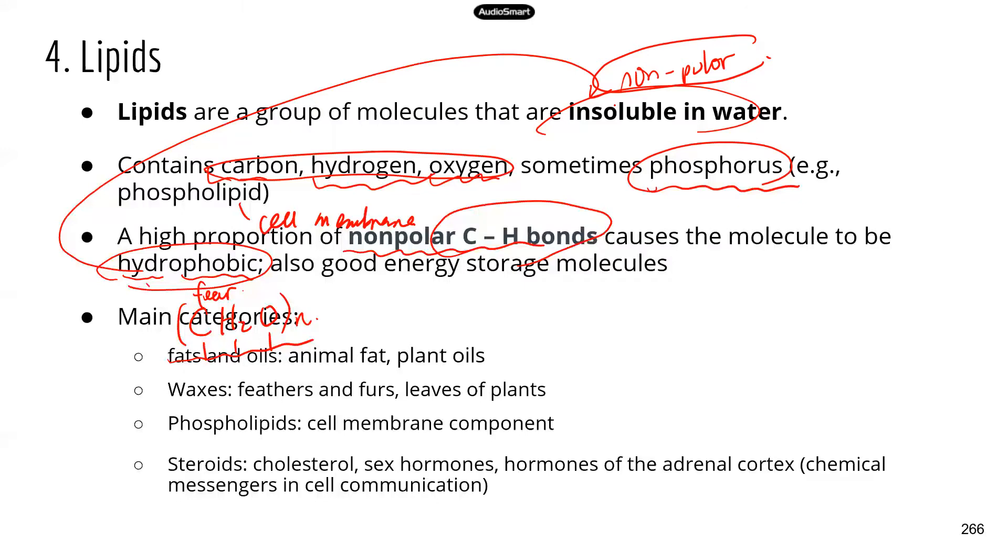Lipids have a few main categories: fats and oils, and those are the lipids that we see the most in our daily life. Waxes, usually they're found in both plant and animals.